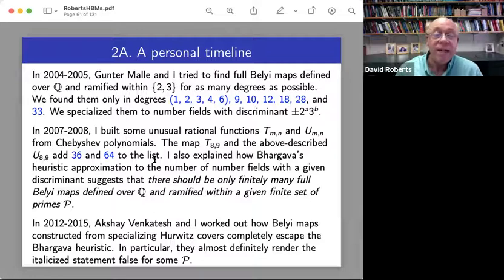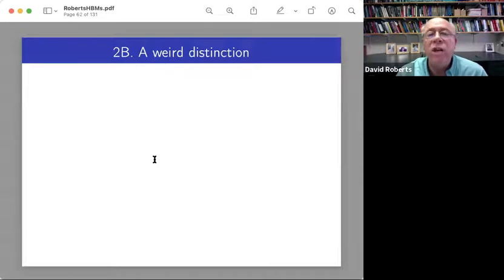So then in 2012, Akshay Venkatesh came up to me at one of the joint meetings, and I did not know him then. And he was very polite, but in the second sentence, he said, quote, I think your conjecture is wrong.